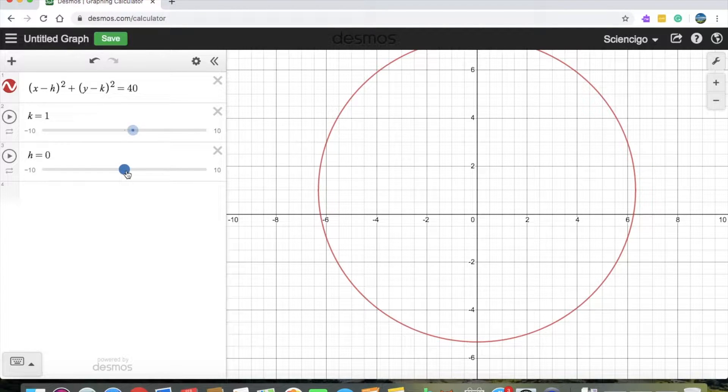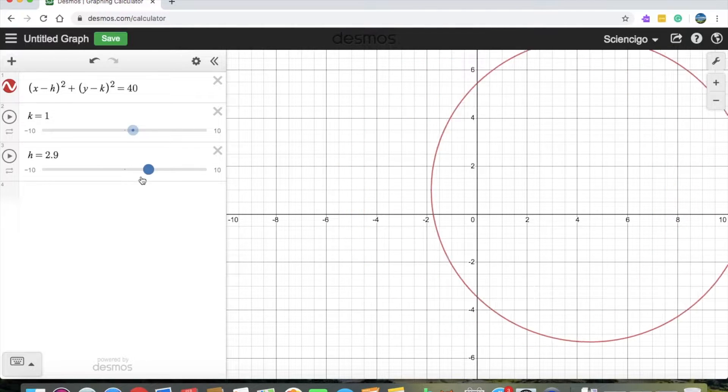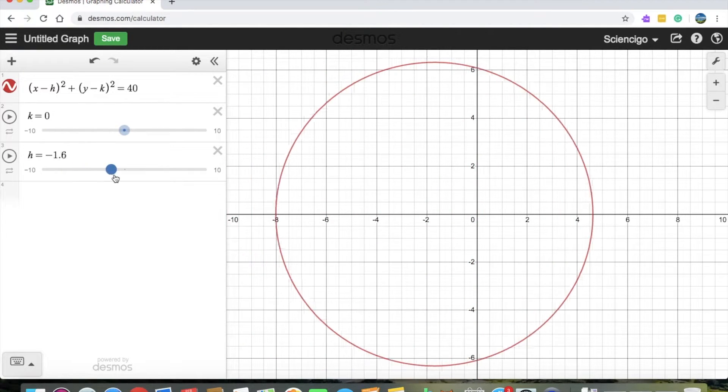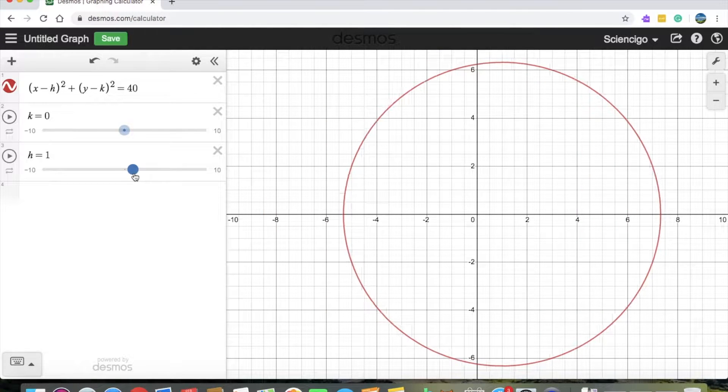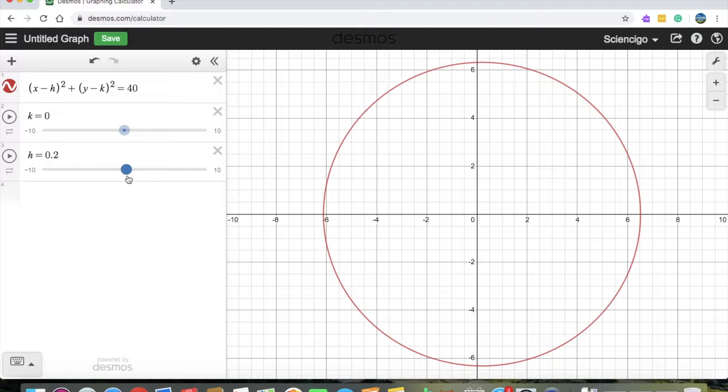So if you move the slider up and down, it makes the circle go left and right if you do it for h. For k, it makes it go up and down. So you can set that accordingly. I am just going to do it like 0.2. And for k, I will do it 0.